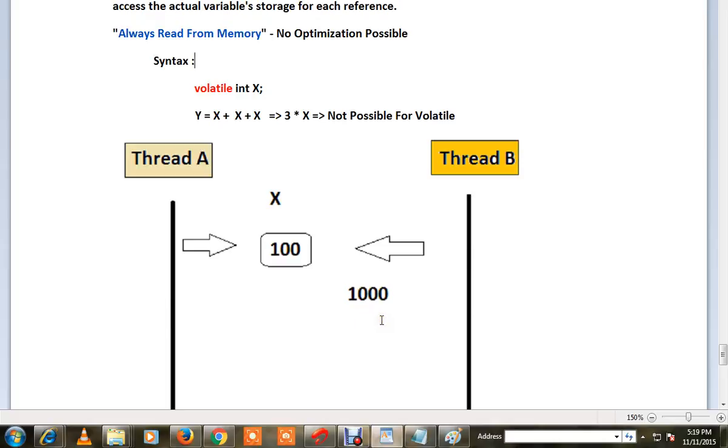Now Thread A might not be aware what is the current value, so we mark this variable as volatile so that Thread A always reads from the memory for the x value. It does not take its own reference; it will always read from the memory. Otherwise, the program will become inconsistent.